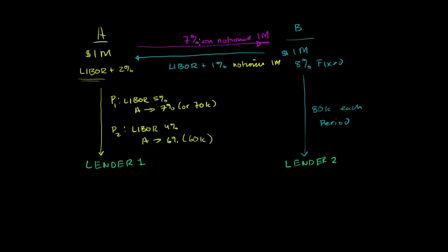And that word notional just means that that $1 million will never change hands, that they're just going to exchange the interest payments on $1 million. And this agreement right over here is called an interest rate swap.